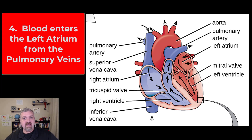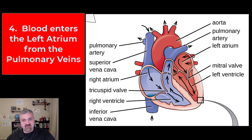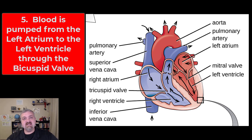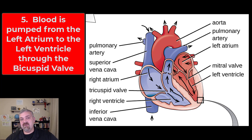Blood is going to flow back through the pulmonary veins, which carry blood back into the left atrium. Now we're in what's called the systemic circuit, because this side of the heart is going to carry blood everywhere else. When the left atrium contracts, it's going to force blood into the left ventricle through the left AV valve, also known as the bicuspid valve, also known as the mitral valve.